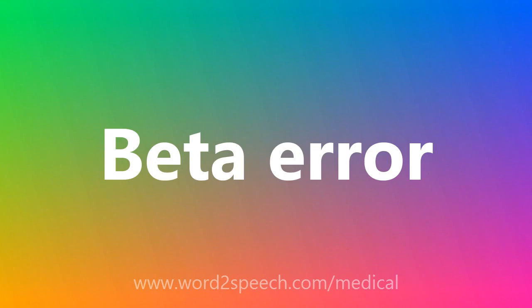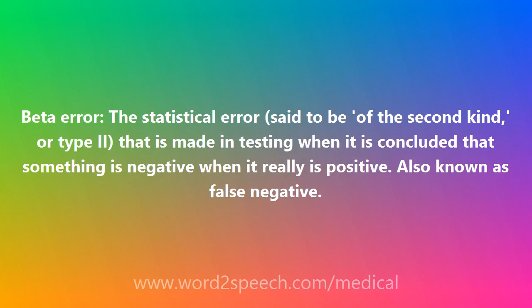Beta error: the statistical error said to be of the second kind, or type 2, that is made in testing when it is concluded that something is negative when it really is positive. Also known as false negative.